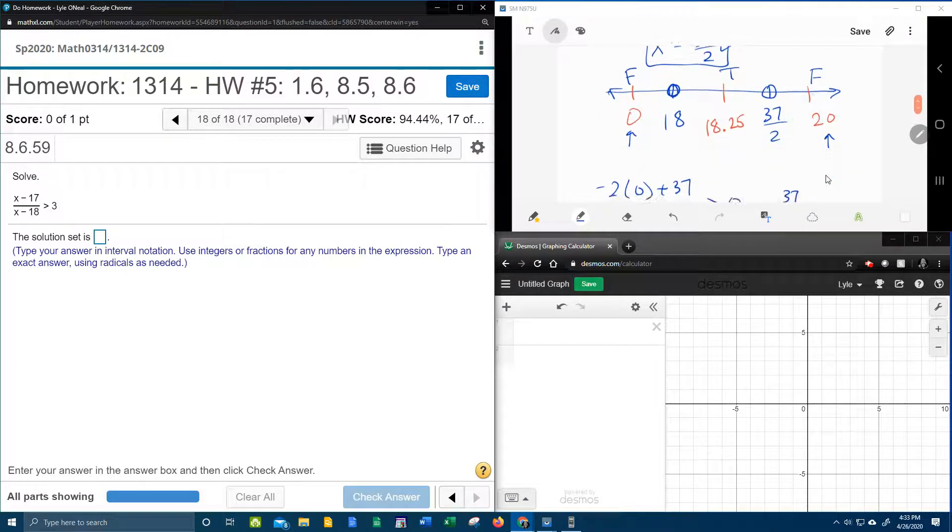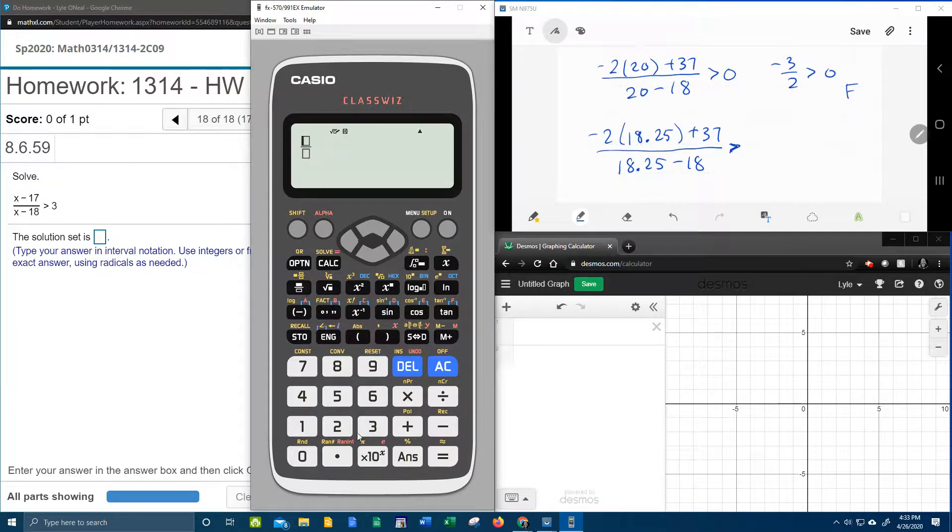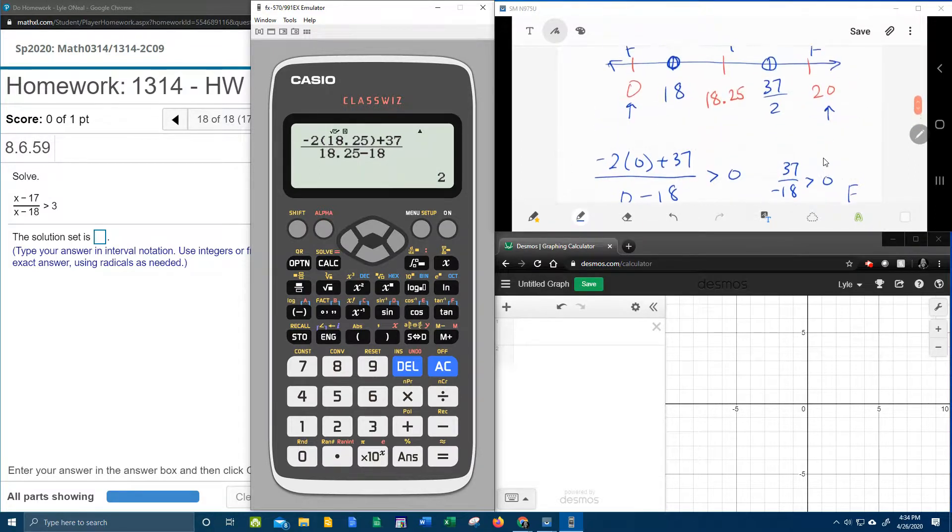Now checking 18.25: plugging in x = 18.25 gives (-2(18.25) + 37)/(18.25 - 18). Using the calculator, this actually ends up being a whole number—it equals 2. Is 2 greater than 0? Definitely true, which is what I predicted.